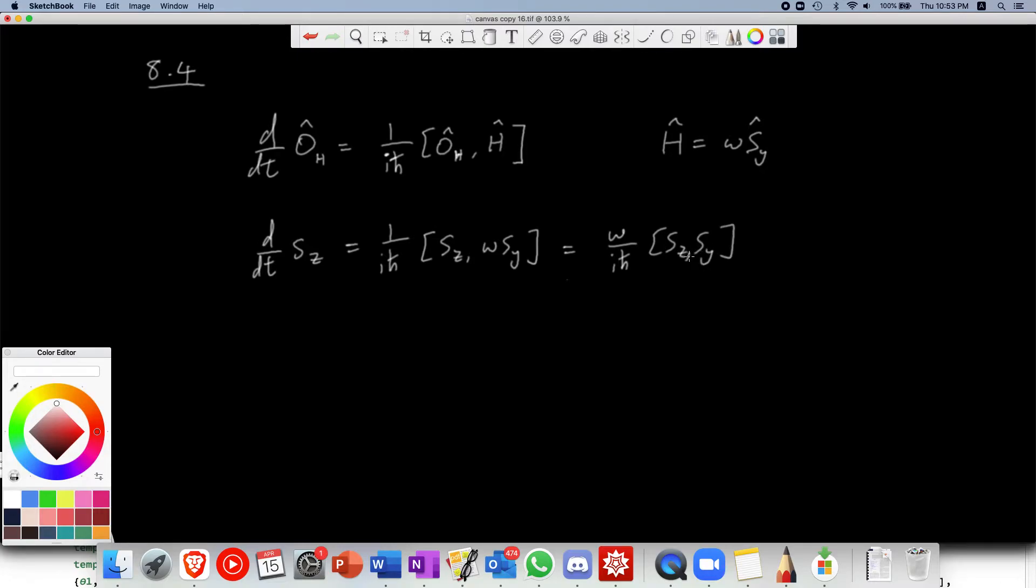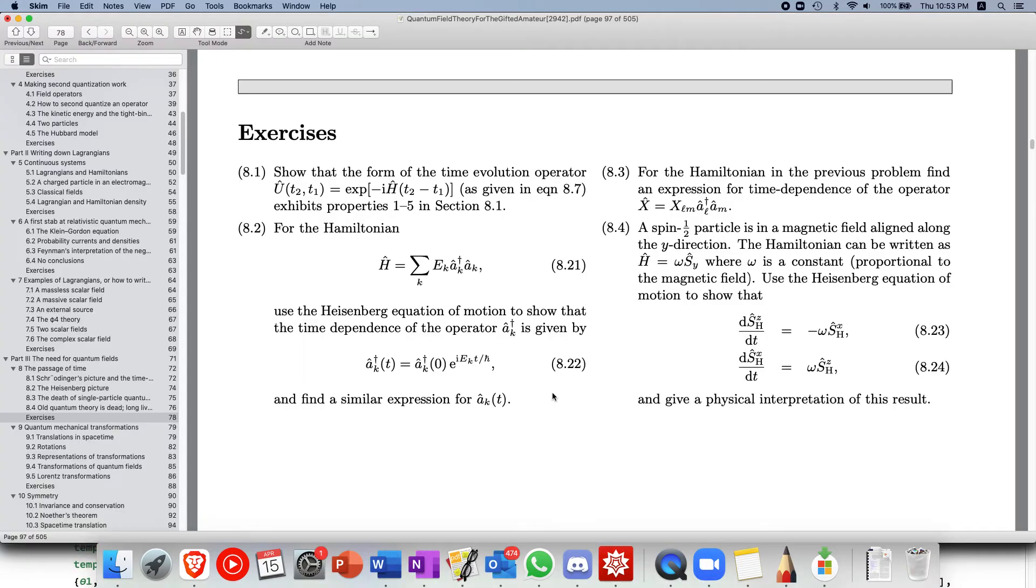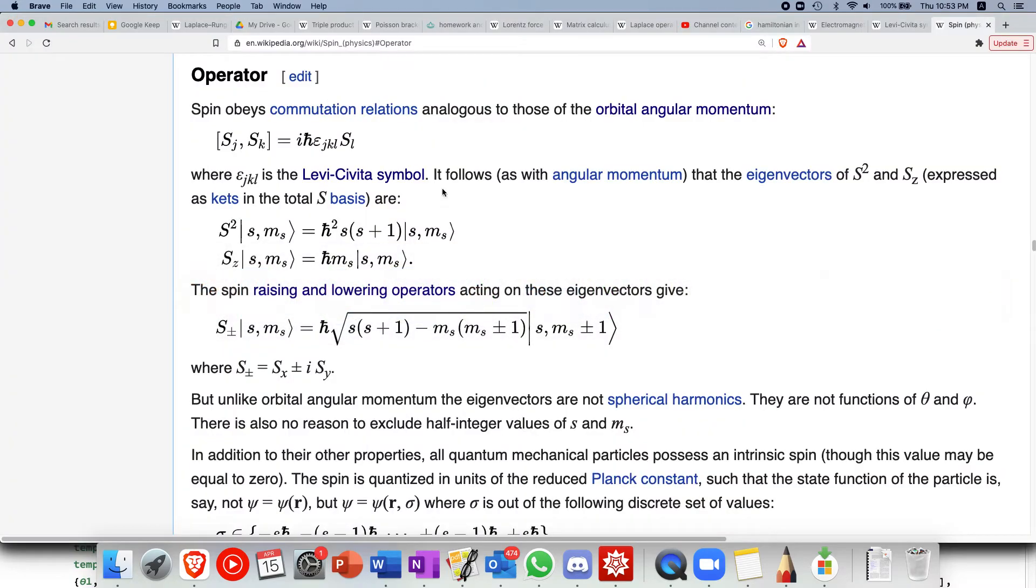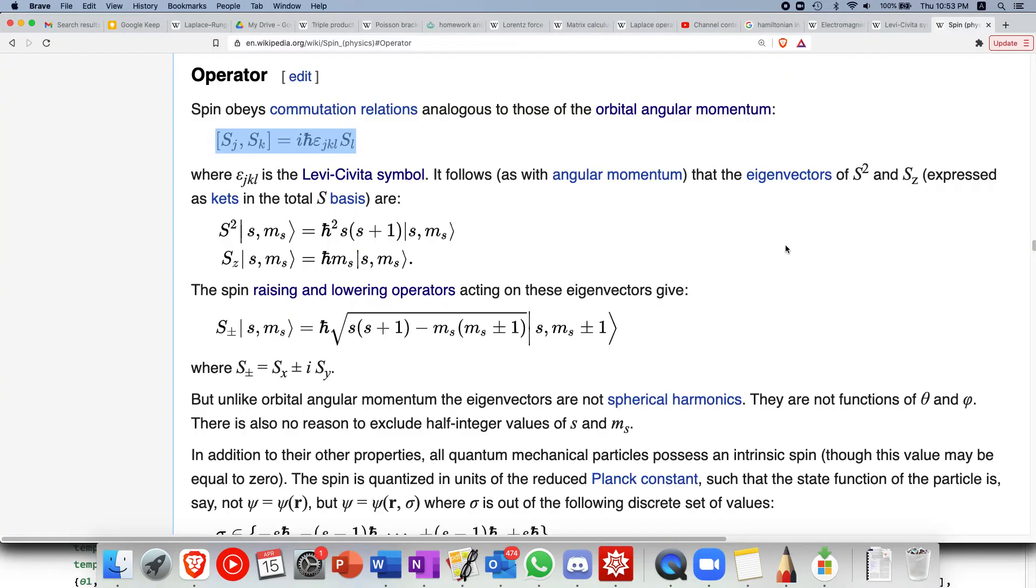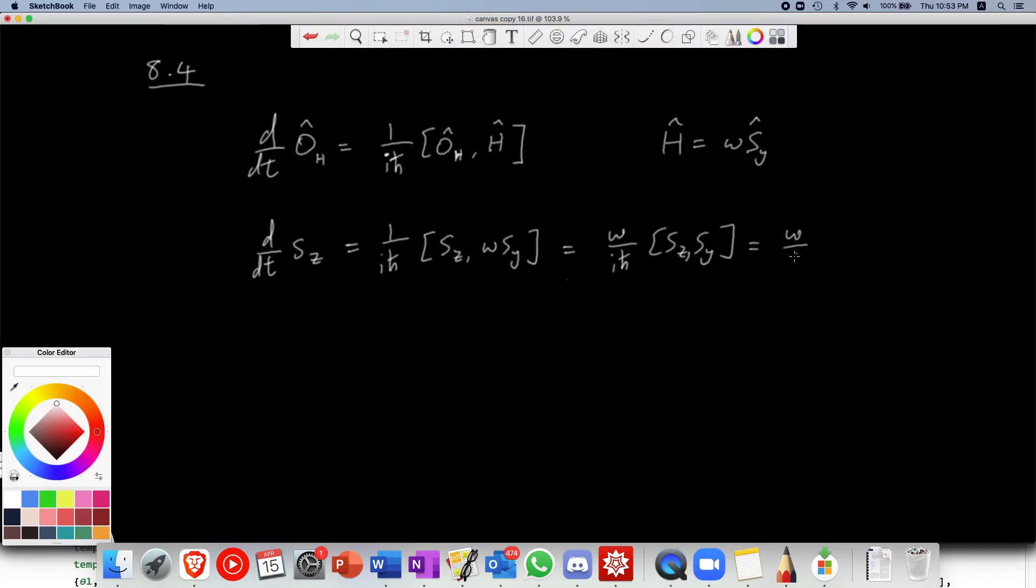Now what is s z commutator s y? We can refer to the spin commutation relations. So s z with s y is simply minus i h bar, minus i h bar s x and that equals to minus omega s x.